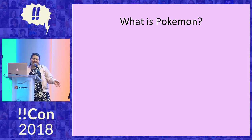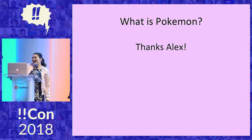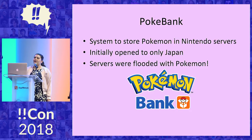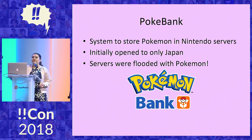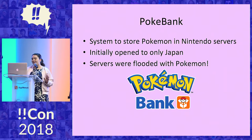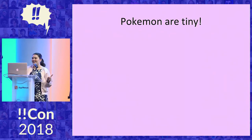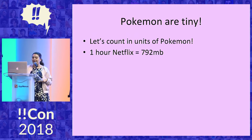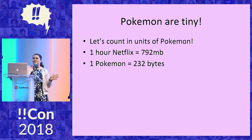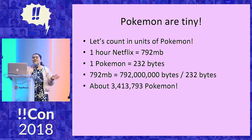So what is Pokemon? Alex already covered this yesterday, so I get to spend more time on content. PokeBank was an app released by Nintendo, which is the company that makes Pokemon. It initially only opened to Japan. The app is used to store Pokemon — users can upload their Pokemon onto Nintendo servers. The servers were so flooded with Pokemon just by Japanese players that they had to close down the servers and delay the worldwide release for several months. But Pokemon are tiny, so we can count in units of Pokemon. One hour of a Netflix stream is 792 megabytes of data, and one Pokemon is about 232 bytes currently. So that's 3.4 million Pokemon you can stream using the same data as one Netflix show.